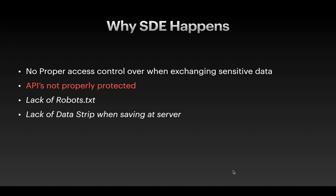Why does SDE happen? First, there is no proper access control over the exchange of sensitive data. Second, APIs are not properly protected — unauthenticated APIs that anyone can call for any user also lead to SDE. Third, lack of a robots.txt file is very important, as in the PayPal example where Google's crawler was able to crawl invoices. The robots.txt file defines rules telling crawlers what can and cannot be crawled from the website.